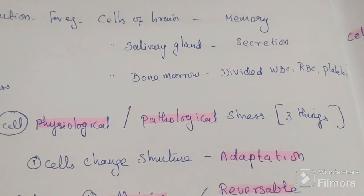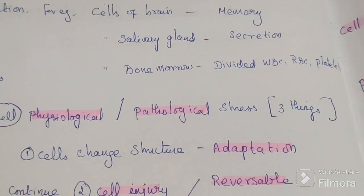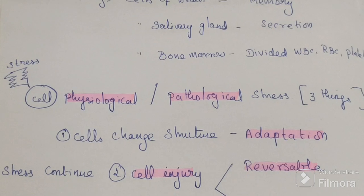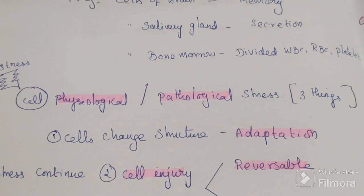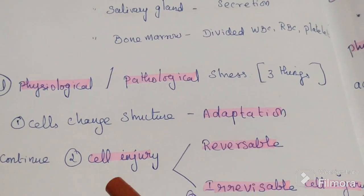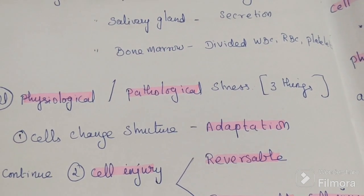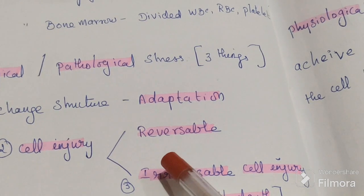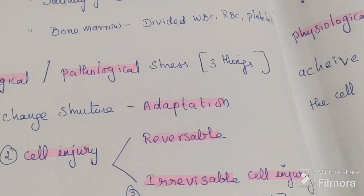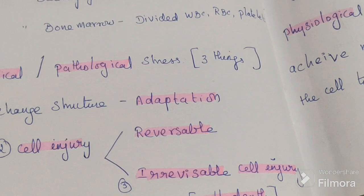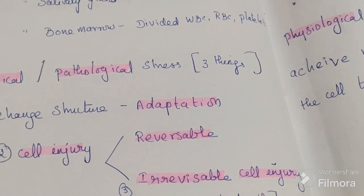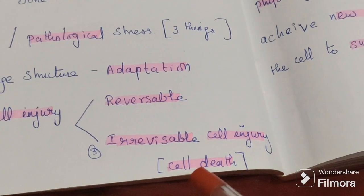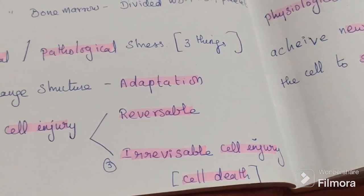For survival, the cell undergoes adaptation. If the stress continues, the second thing that happens is called cell injury. Cell injury has two types: reversible cell injury, and if the stress continues further, irreversible cell injury — which is also called cell death.